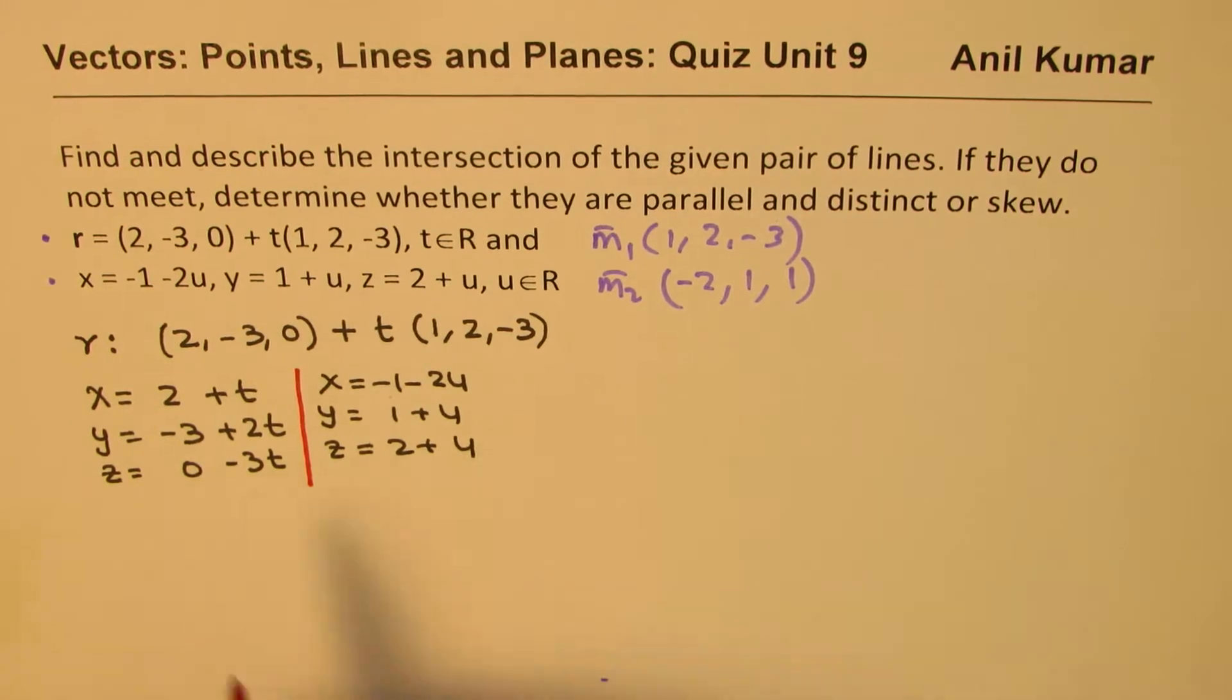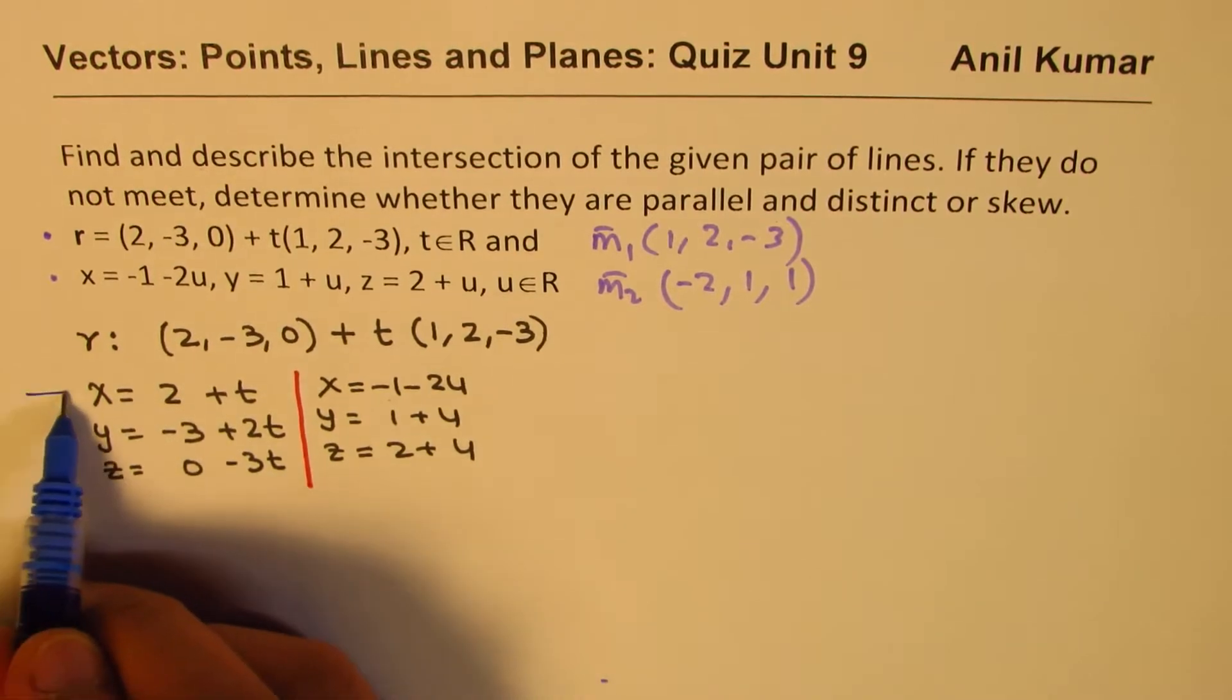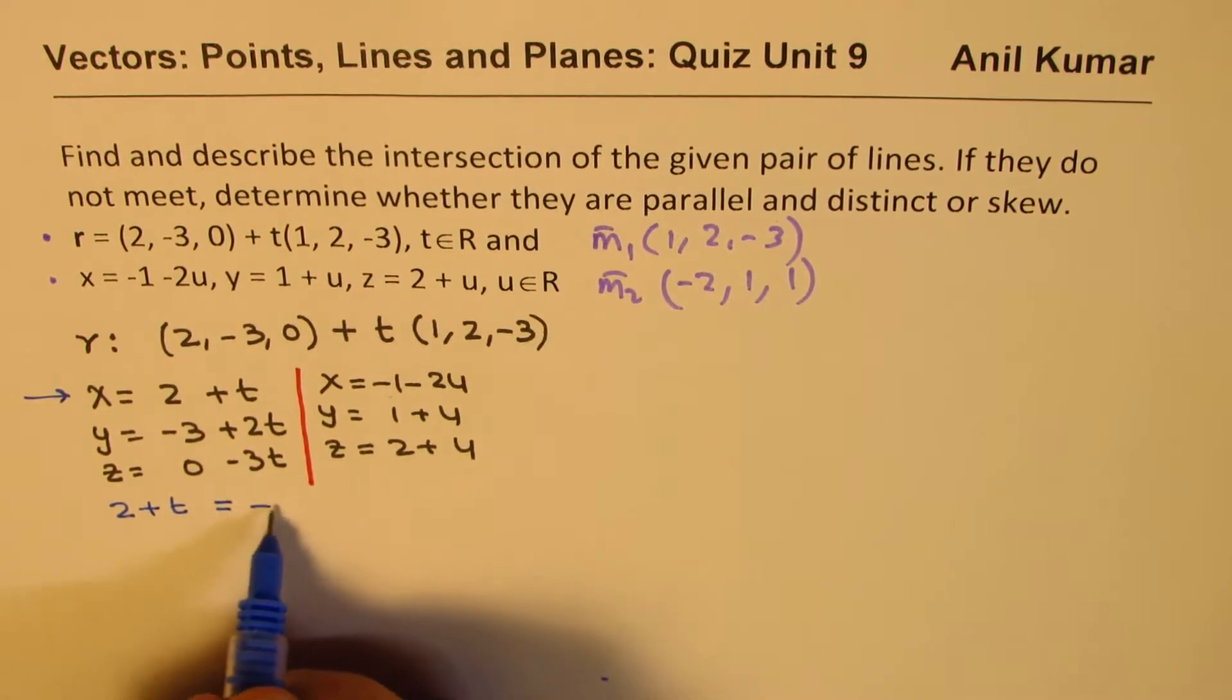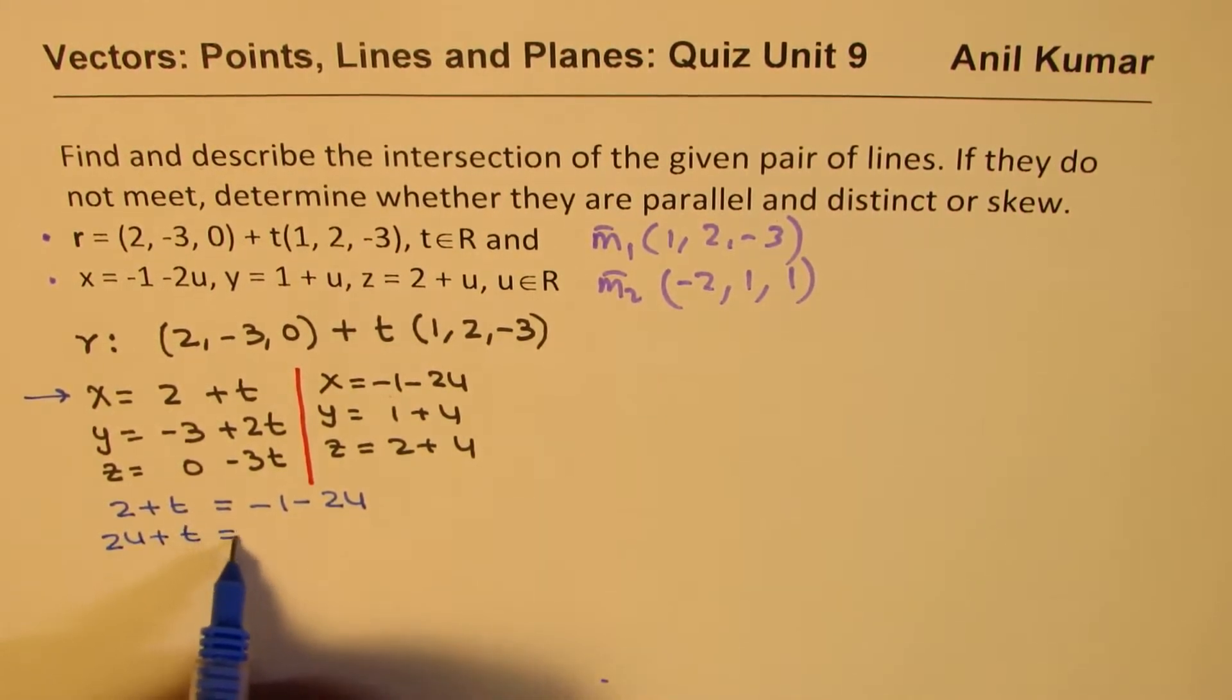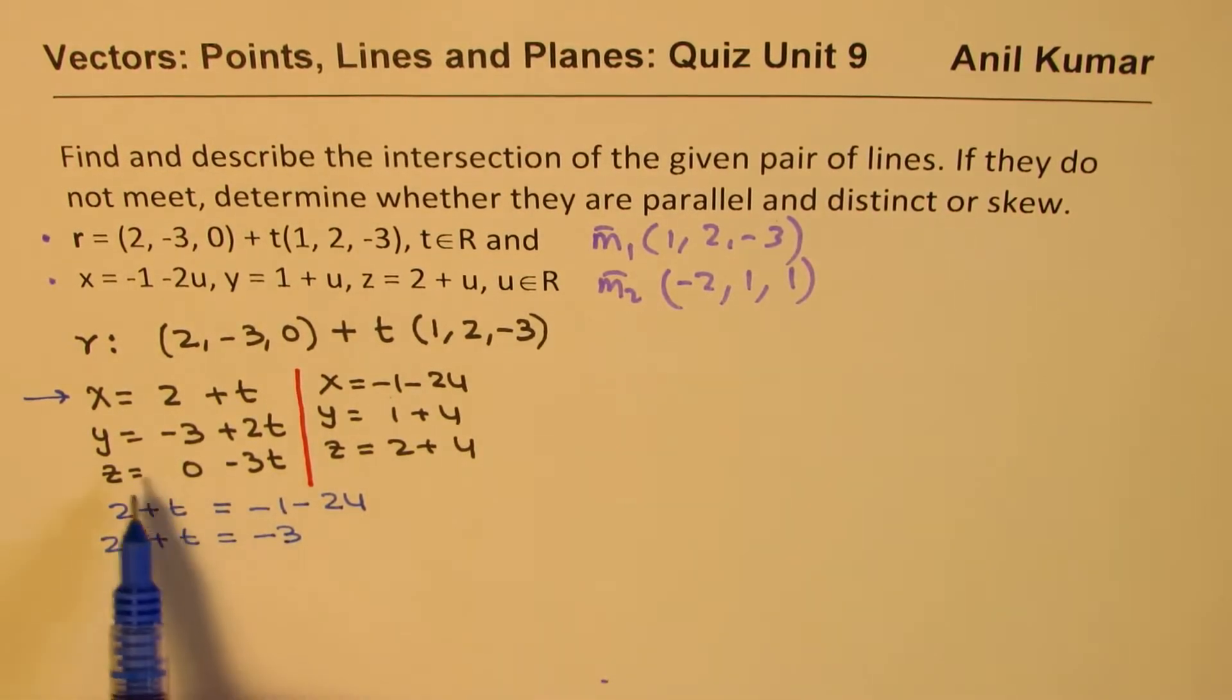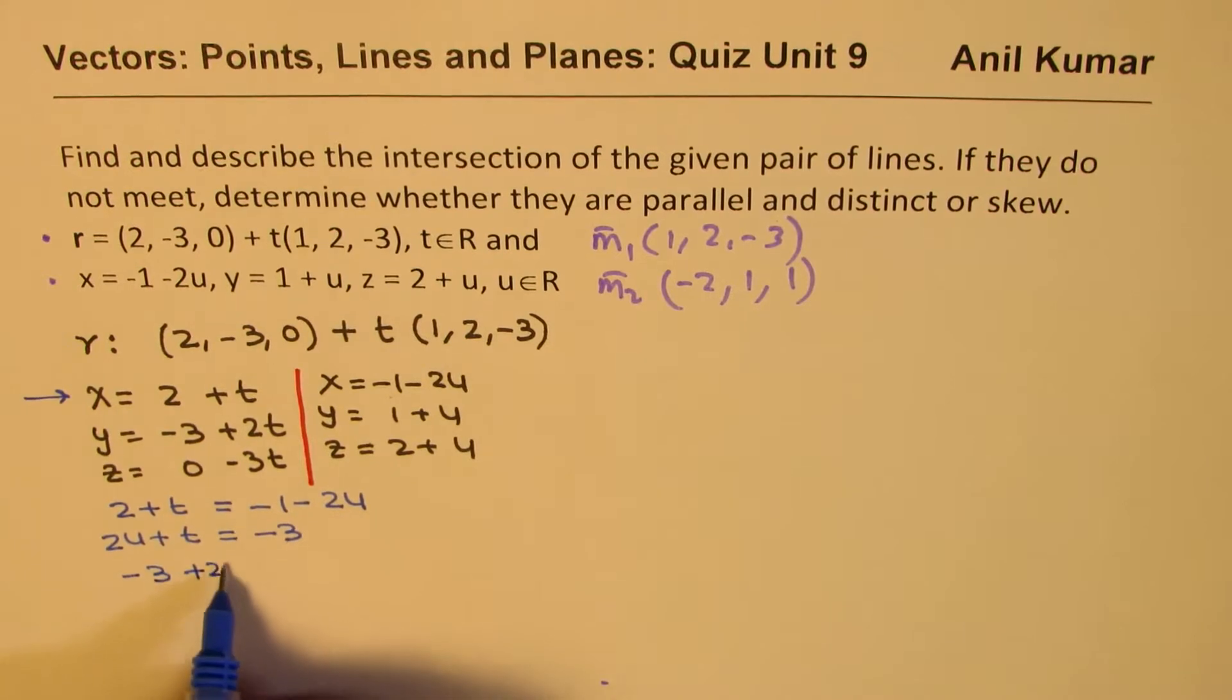Now, if they are intersecting, then their X values should be exactly the same, right? So that means we will equate the X values. We get one equation, which is 2 + t = -1 - 2U. Let's rearrange, we get here 2U + t = -3. Correct? Now, let's look into the second equation.